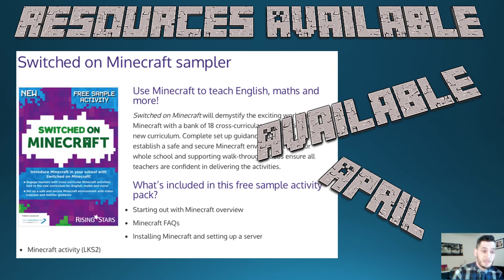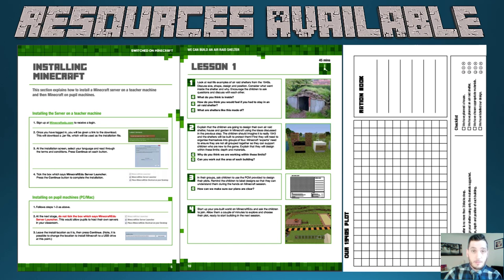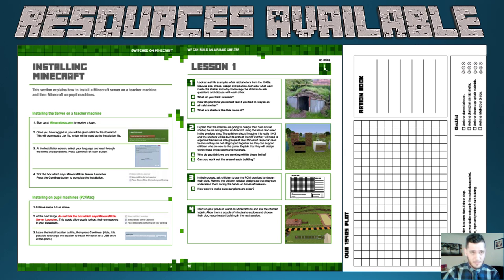Watch this space — that will be one useful resource. If you go onto the Rising Stars website, you will be able to get hold of a sample so you can see what it's going to be like. You can see some of the examples I've taken from the sample — we've got a lesson one about what it might be like to create your own shelter in the 1940s. There are also instructions on how to install and set it up, and worksheets that come with it that you can photocopy and use over time in your lesson.